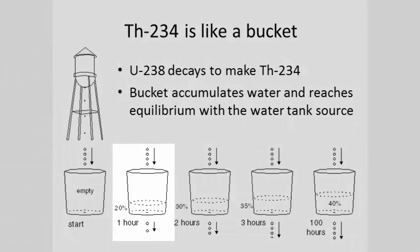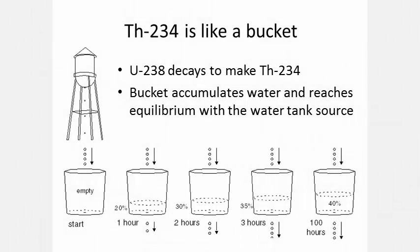After one hour, the bucket is 20 percent full, but now it's losing two drops per second out the bottom as it gains four drops per second from above, for a net gain of two drops per second. After another hour, the bucket is 30 percent full, but now it's losing three drops per second as it's gaining four drops per second, for a net gain of one drop per second, and so on.